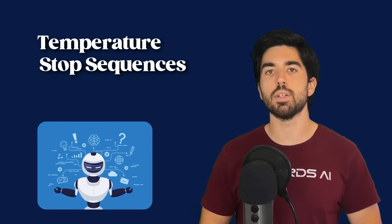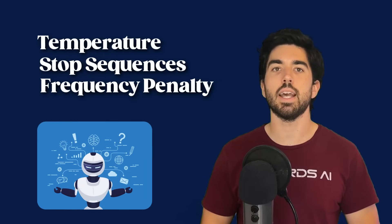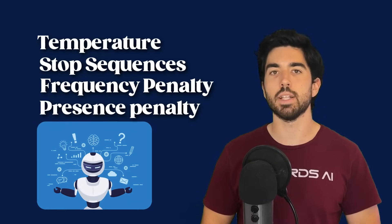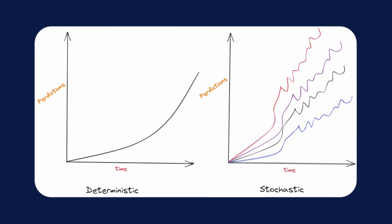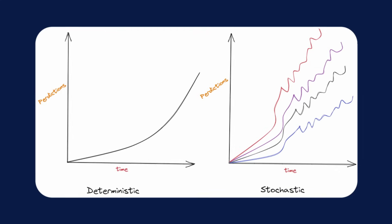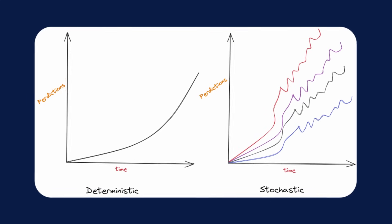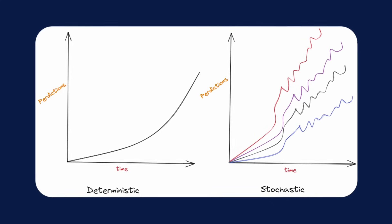Indeed, you can adjust and tune several parameters to influence your model's generations, like temperature, stop sequences, a frequency penalty, and a presence penalty. Let's start with temperature. It regulates the output's randomness. A value below 1 yields more deterministic outputs, while a value above 1 introduces greater variation in those outputs.